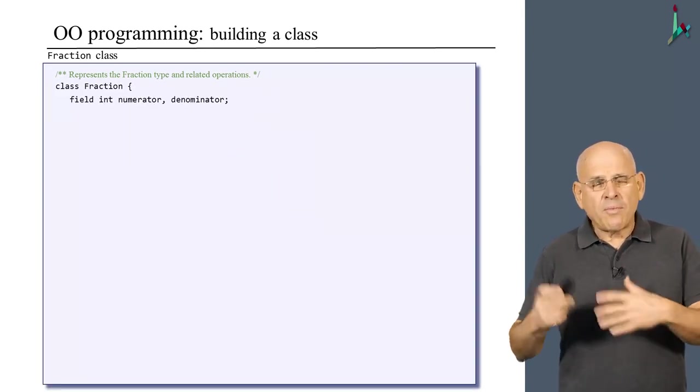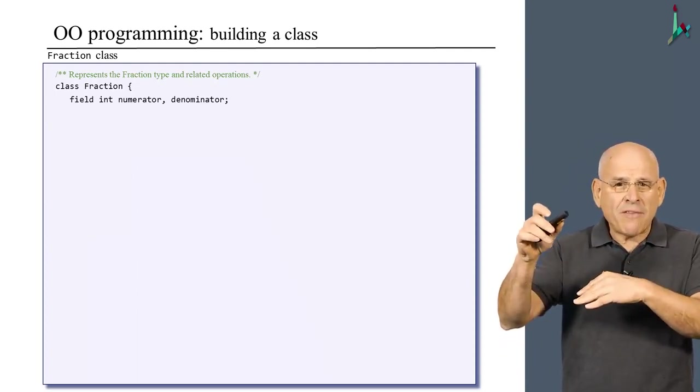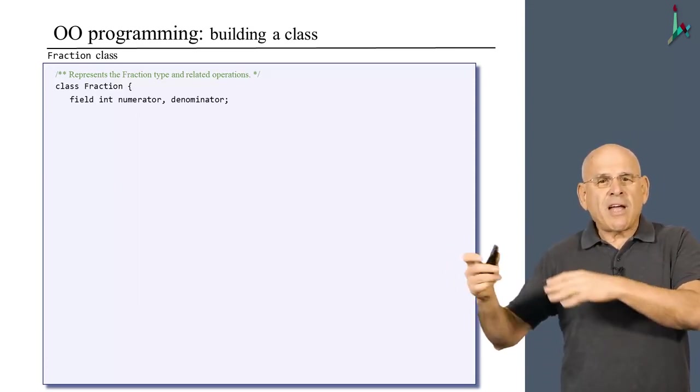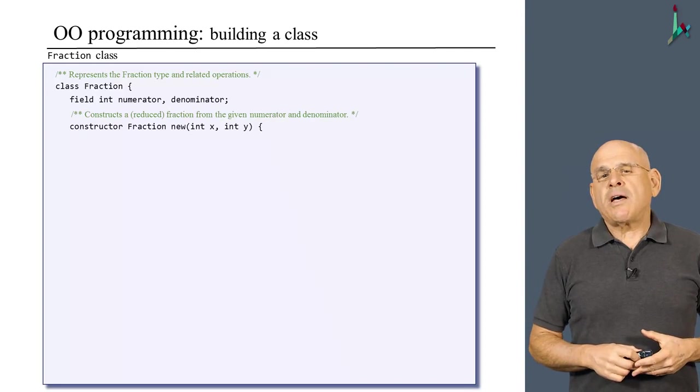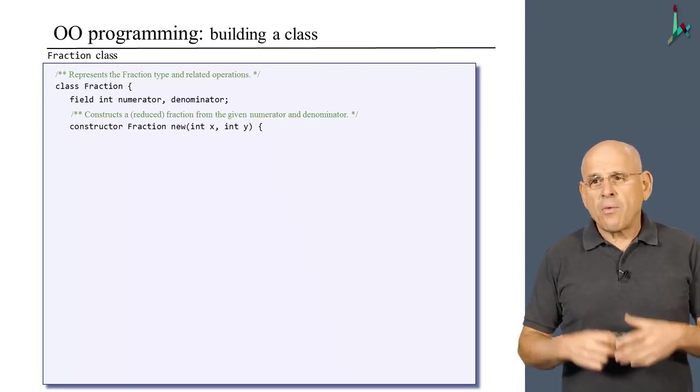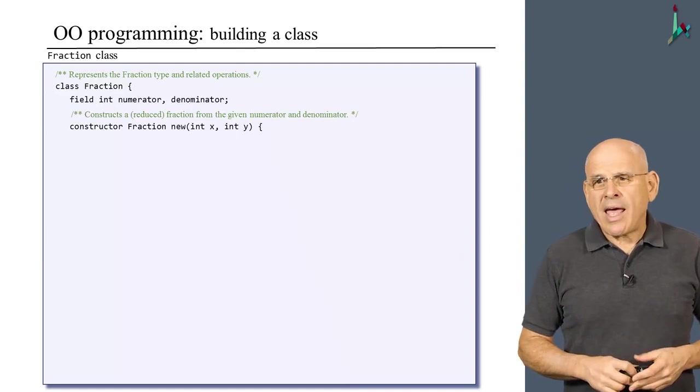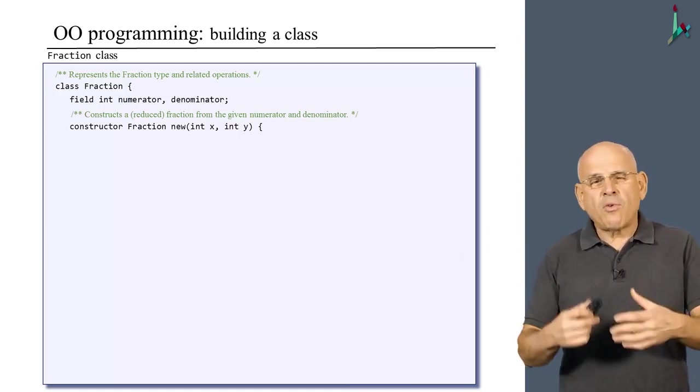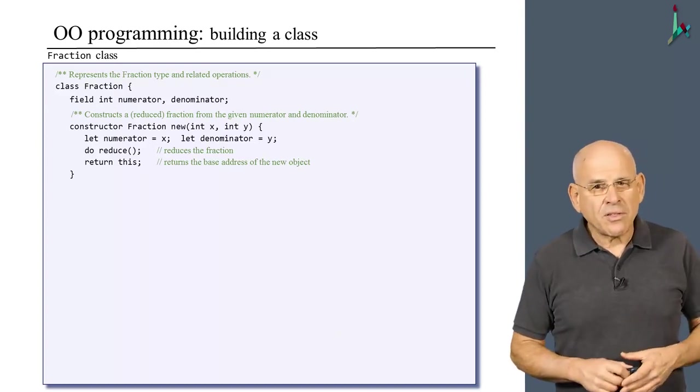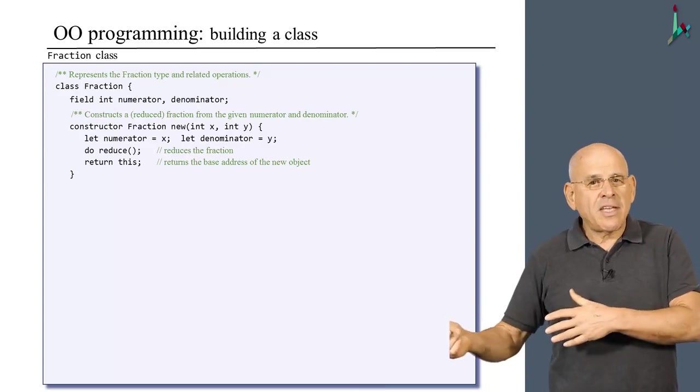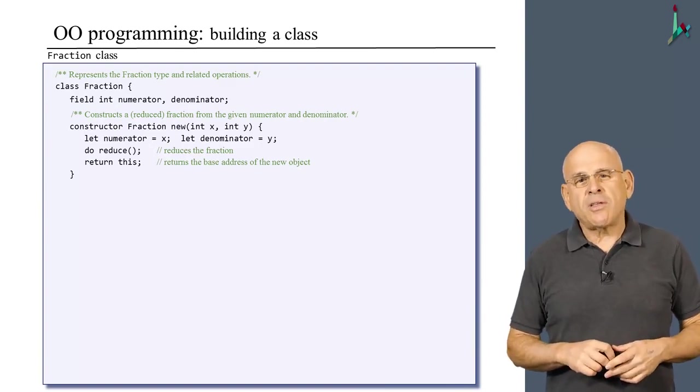All right, moving along, let us assume that we designed these two accessors. They are in the class. I'm not showing them because I don't have enough space on each slide. So everything that we discussed before in previous slides is already part of the class. The next part of the class is going to be a constructor, a method which is designed to create new objects. Well, this constructor receives two inputs, two parameters, x and y. And it goes on to populate the numerator and denominator of the current object with the values of x and y. Then it reduces the fraction, which is important in case the fraction is something like 8 over 16, we want to reduce it to one half. And finally, it returns the base address to this object fraction, which was just created.